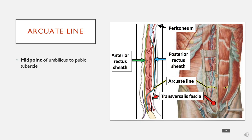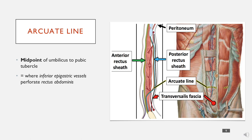In terms of where it is, the arcuate line is at the midpoint between the umbilicus and the pubic tubercle. Anatomically, it's defined as the point where the inferior epigastric vessels perforate the rectus abdominis muscle, and you can see that here.